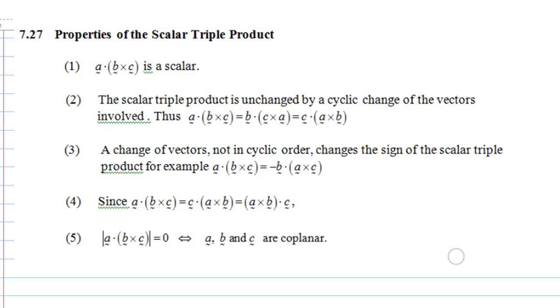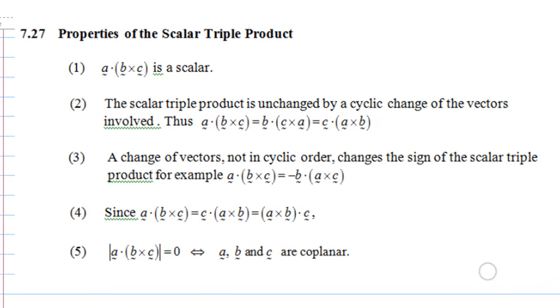This video will introduce properties of the scalar triple product. Number one, A dot B cross C is a scalar. This means this is just a number, not a vector. There is no direction.